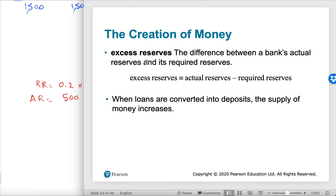Excess reserve equals actual reserve minus required reserve. Required reserve equals deposits multiplied by the required reserve ratio, which is determined by the central bank. If deposits are 1000 and RRR is 20%, required reserve is 200, and we can read actual reserve from the balance sheet to determine whether excess reserve exists.